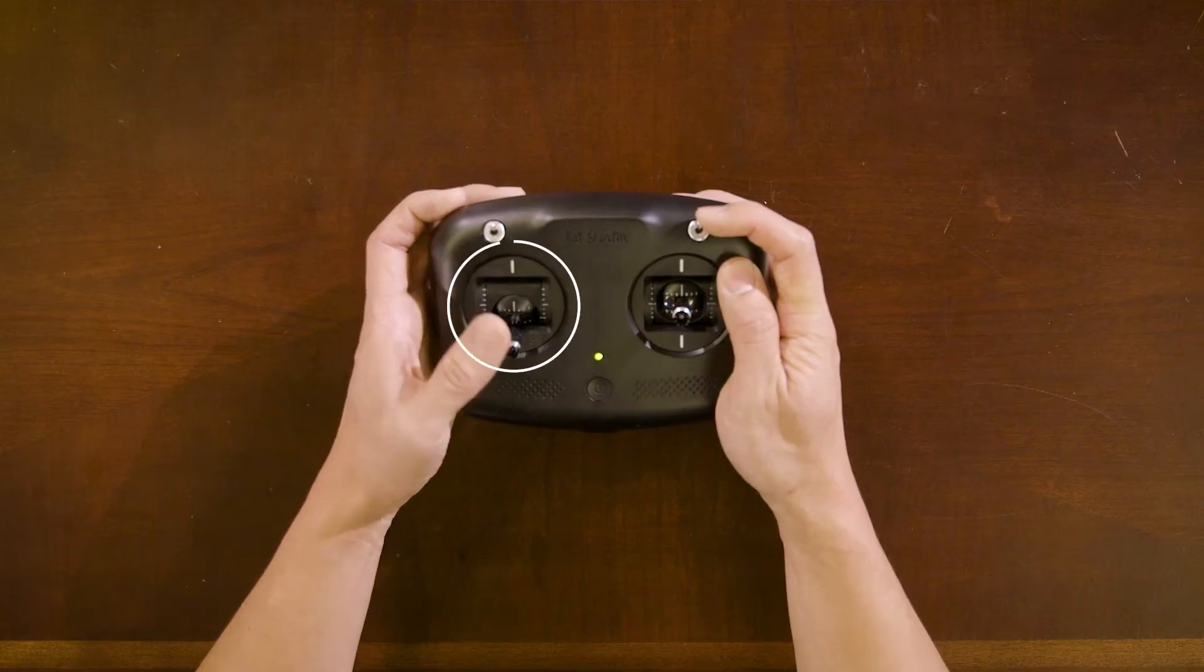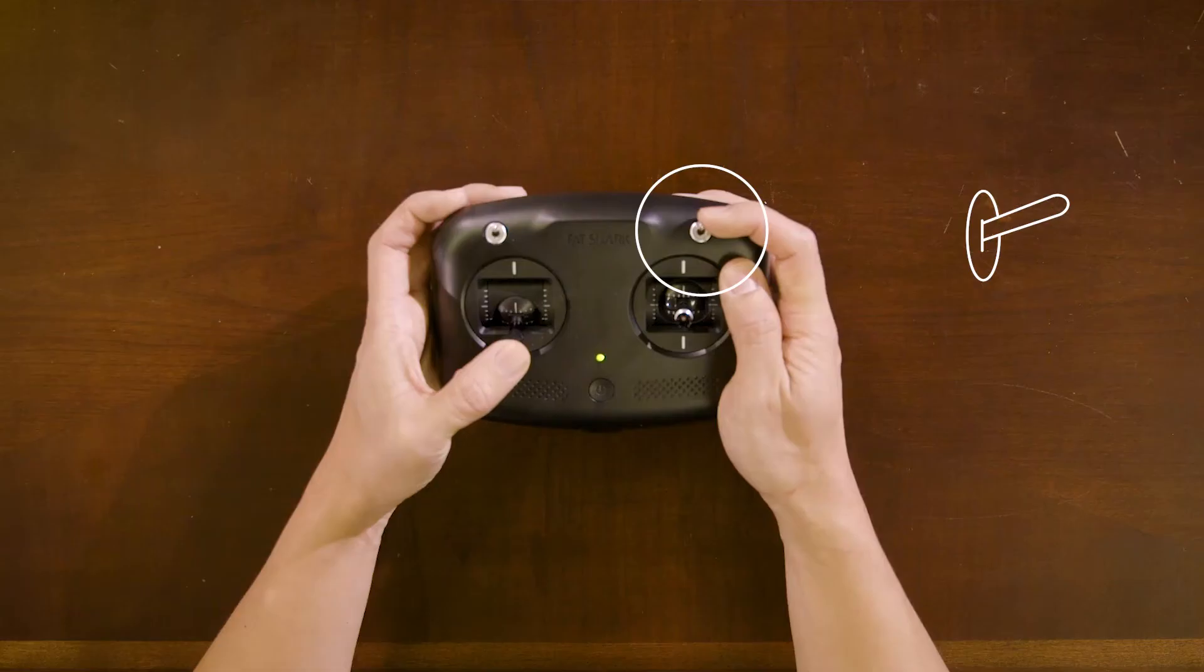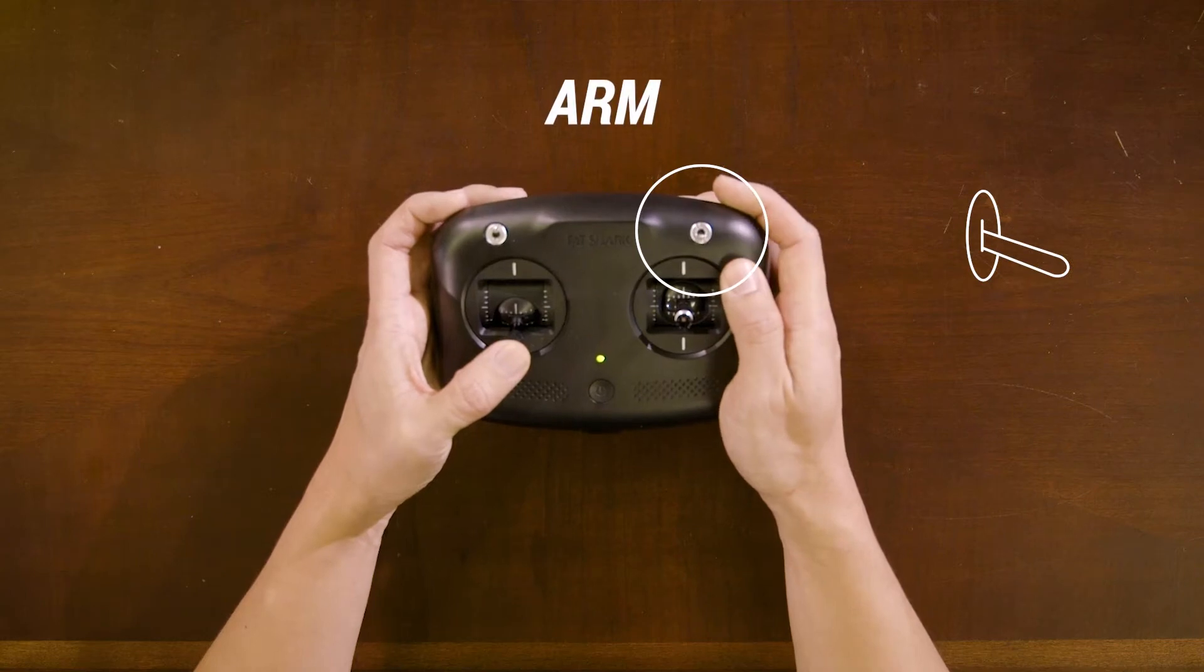When you're ready to fly, lower your throttle stick all the way down to zero your throttle. Then take the upper right switch and pull it all the way towards yourself. This will arm your quad and the propellers will start to spin. You're now ready to take off and start flying.